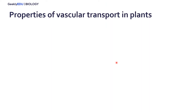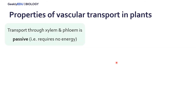Some other things to note about vascular tissues: transport in both xylem and phloem is passive, meaning it requires no energy from the plant. This is why plants are able to move water and nutrients throughout their entire bodies — sometimes quite large, as in redwood trees — using very little energy.